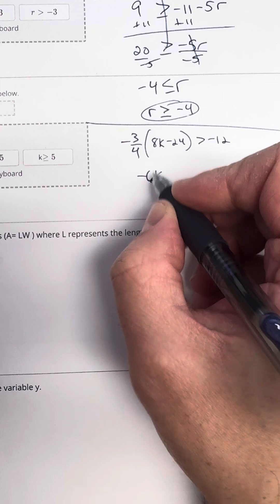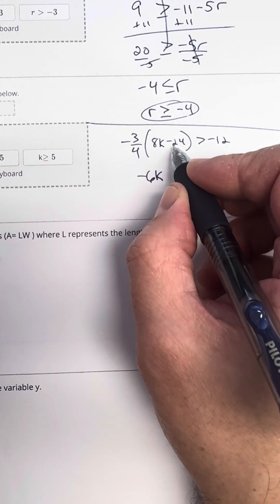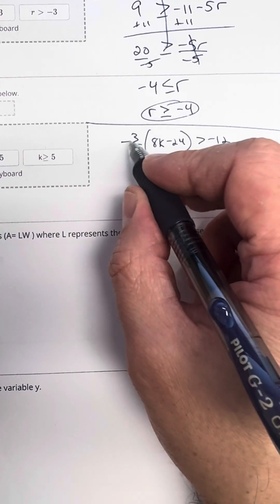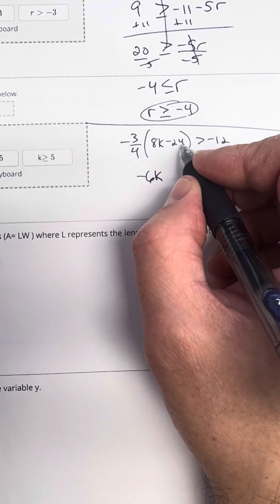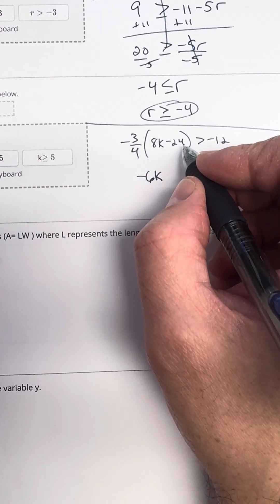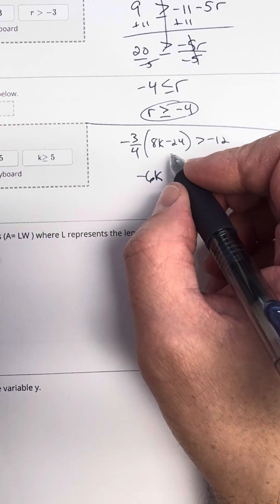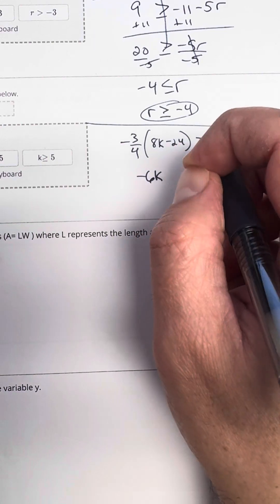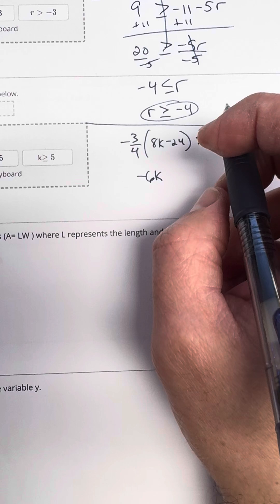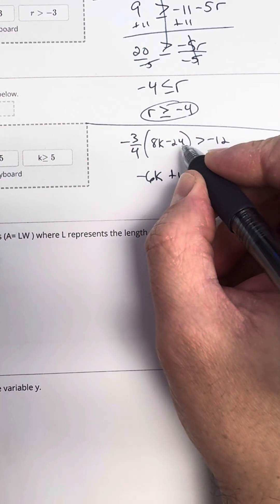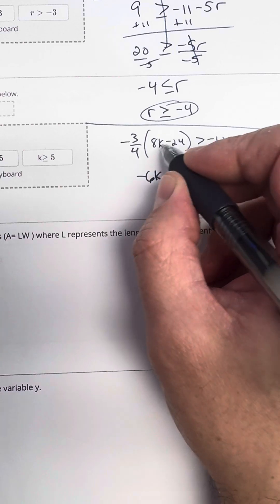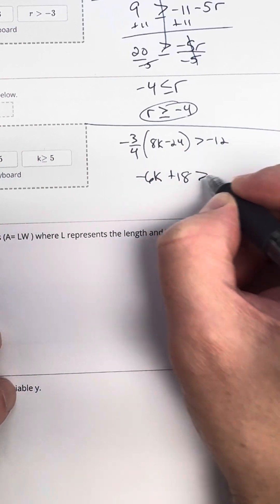If you did it in the calculator, it would show you negative 6. Negative 3 over 4 times negative 24. So negative 3 times negative 24 is 72. And 72 over 4, oh boy, I think that's 18. So I'm just going to go with that. And then positive 72 over 4 is going to be 18. So hopefully that's going to be 18.